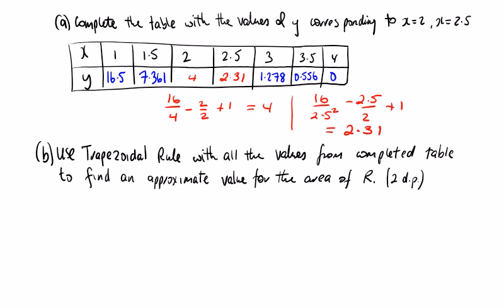Second part to this question, you're asked to use the trapezoidal rule with all the values from the table to find an approximate value for the area of R, correct to two decimal places. So the trapezoidal rule, H over 2, where H is the gap between the values. So in this case, we have 0.5 for H.